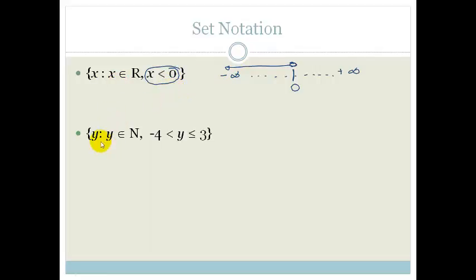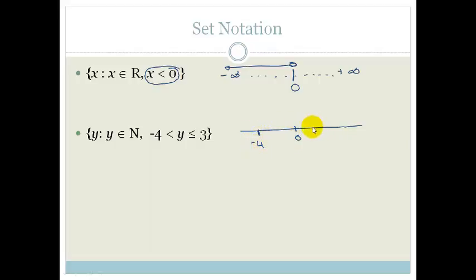Let's look at another example. We've got y as an element of natural numbers, from y is bigger than negative 4 and smaller than or equal to 3. Now this is interesting, because natural numbers actually start at 0 — they don't go below 0. But they say that y is between minus 4 and 3, and because it's natural numbers, it's actually bigger than 0, so that's an open circle there. And then it is smaller than or equal to 3, so y can be any number between 0 and 3.